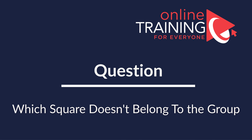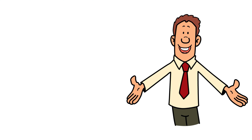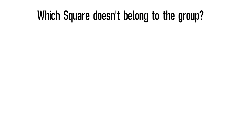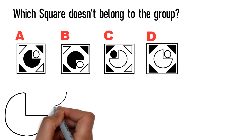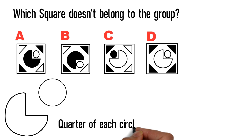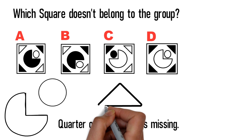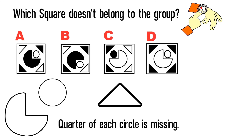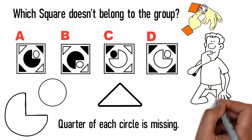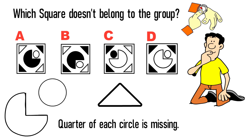I'm excited to share how to solve another 'odd one out' problem. You need to determine which square doesn't belong to the group. You are presented with four squares — choices A, B, C, and D. Each square contains two circles inside; in the large circle, a quarter is missing and replaced with a small circle. All squares also have triangles in the corners. Give yourself five to ten seconds to see if you can come up with the answer.